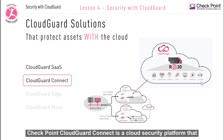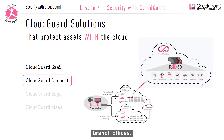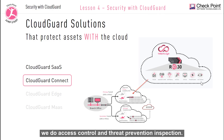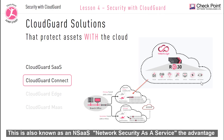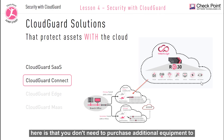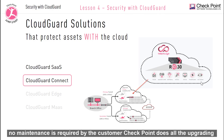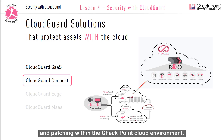Checkpoint CloudGuard Connect is a cloud security platform that provides Checkpoint's latest threat prevention and access control for branch offices. This solution protects your branch networks using the Checkpoint Cloud — all customer data is routed from branch networks to the Checkpoint Cloud, where access control and threat prevention inspection are performed. This is also known as NSaaS, Network Security as a Service. The advantage is that you don't need to purchase additional equipment, and no maintenance is required by the customer — Checkpoint handles all upgrading and patching within the Checkpoint Cloud environment.